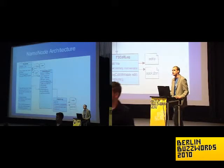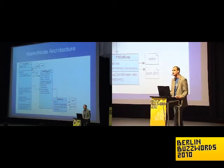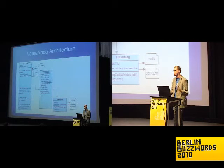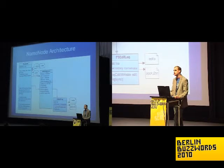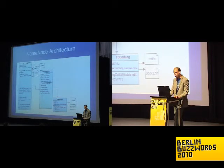Regarding the placement of blocks on data nodes: those are stored in the file system as files named block_1, block_2, etc. They also have a checksum file alongside them containing a CRC checksum for every 512 bytes of data, typically. That's managed by the data node on that host.